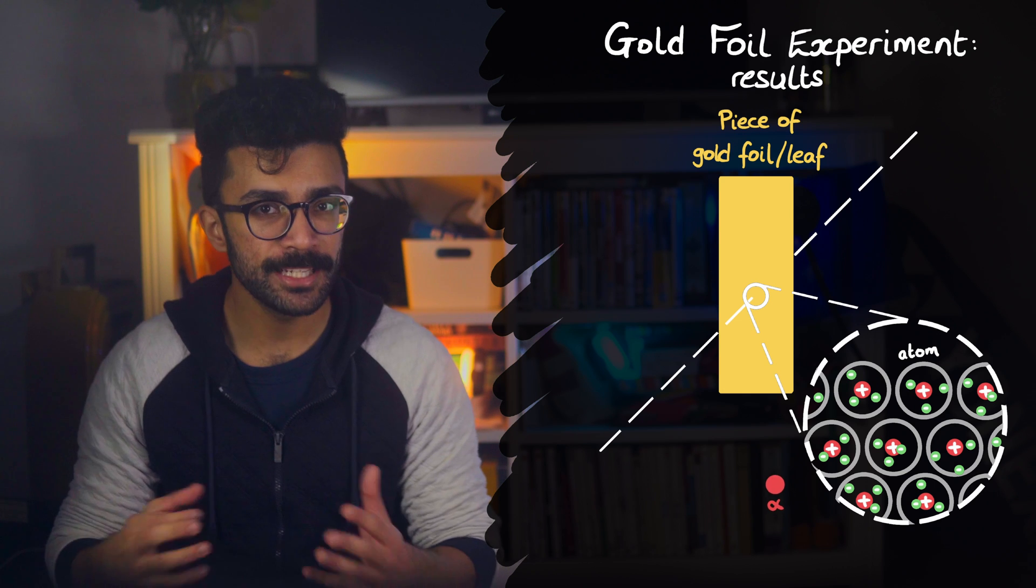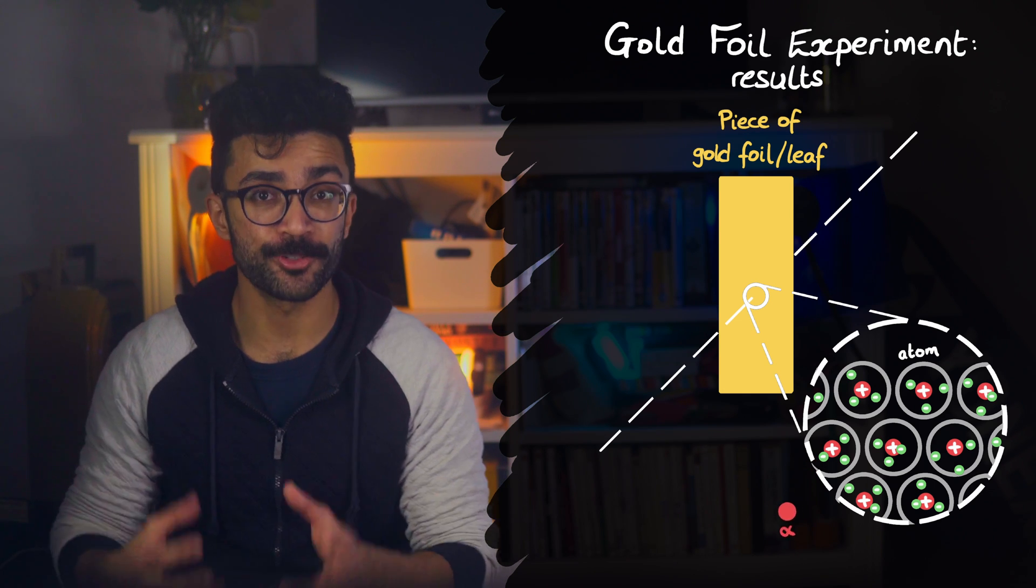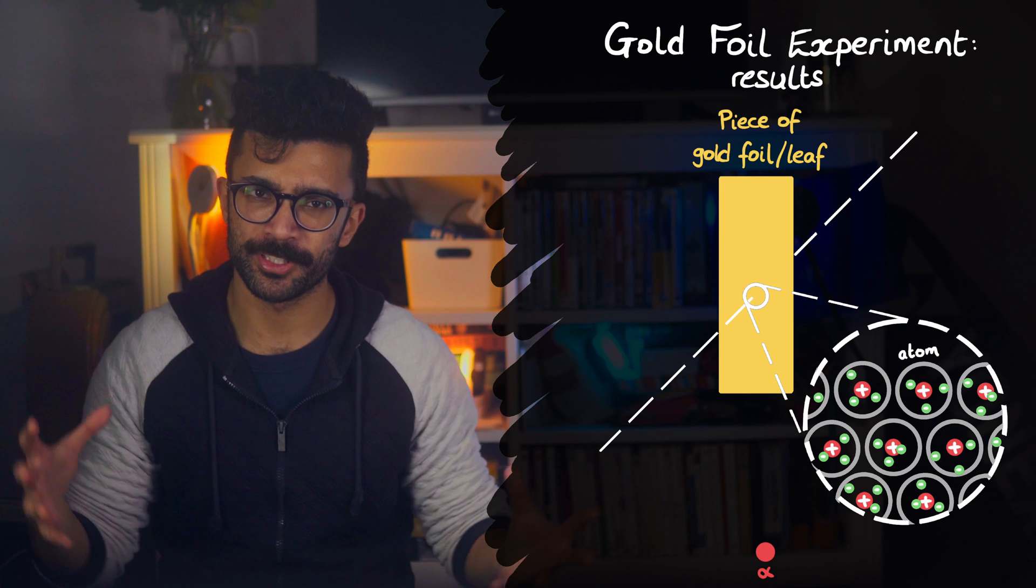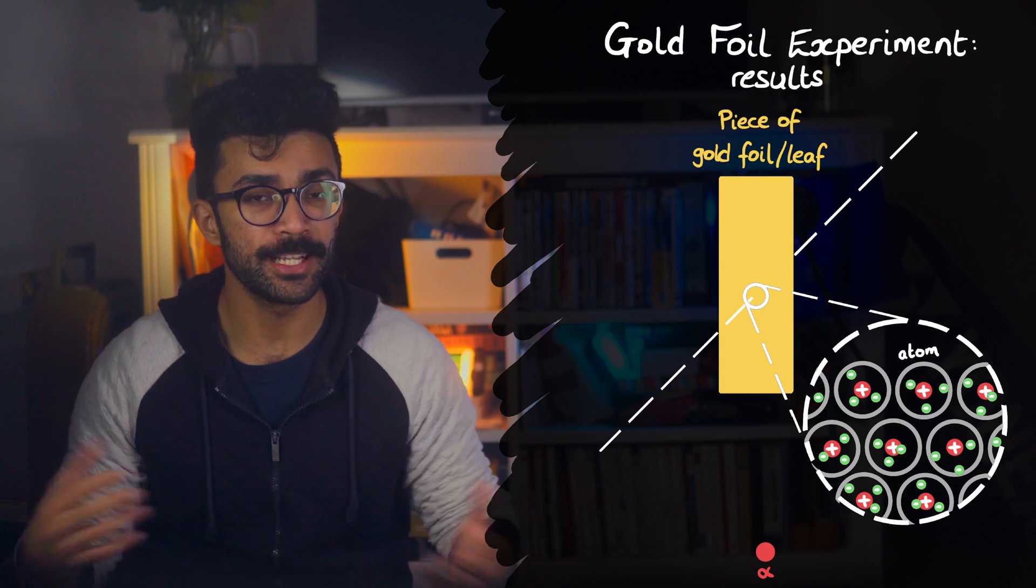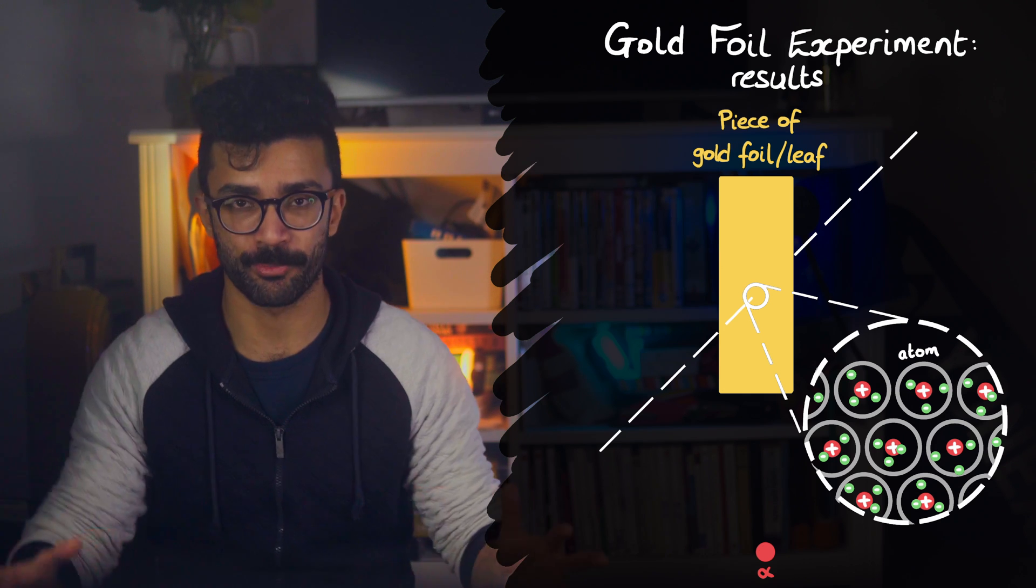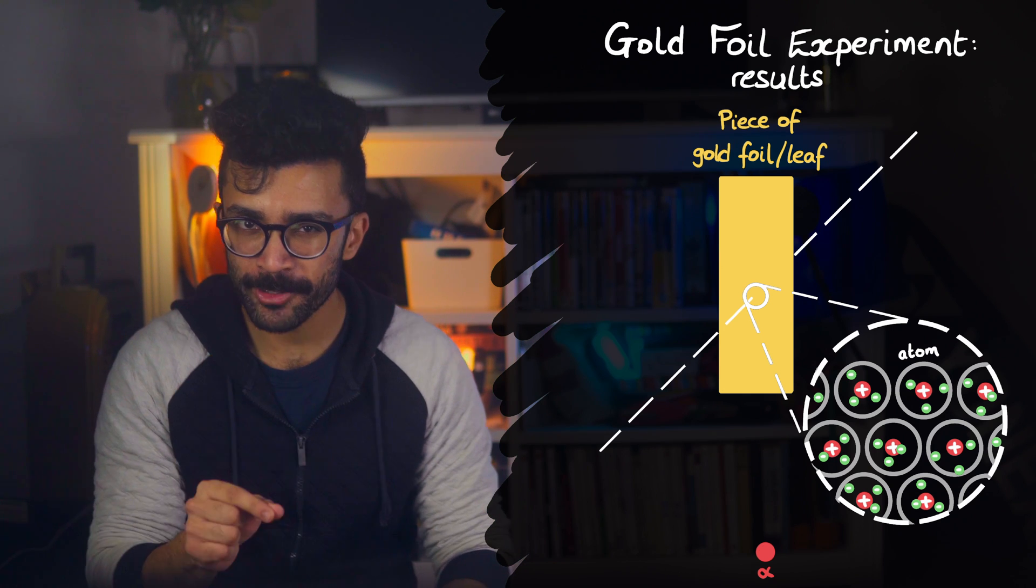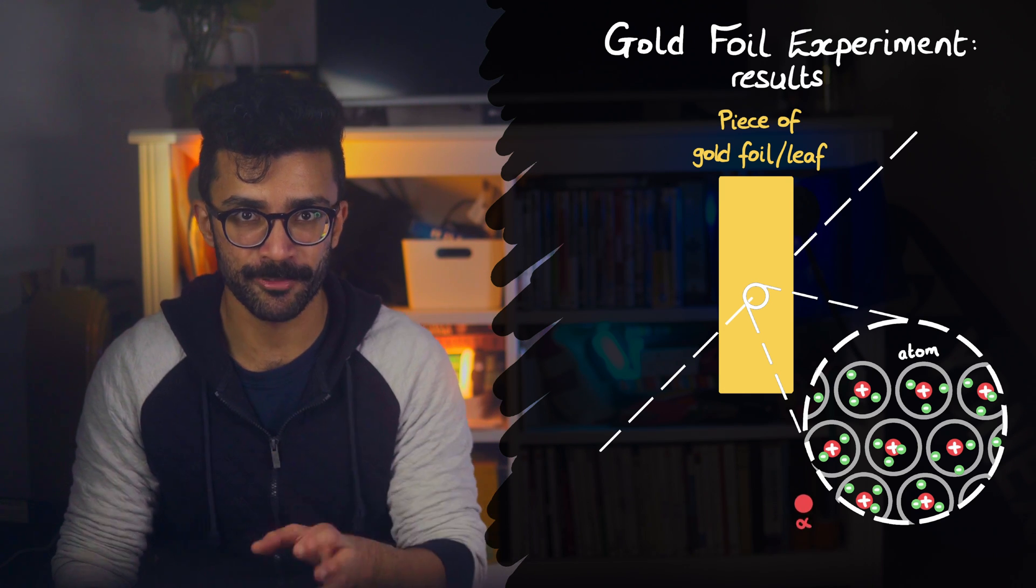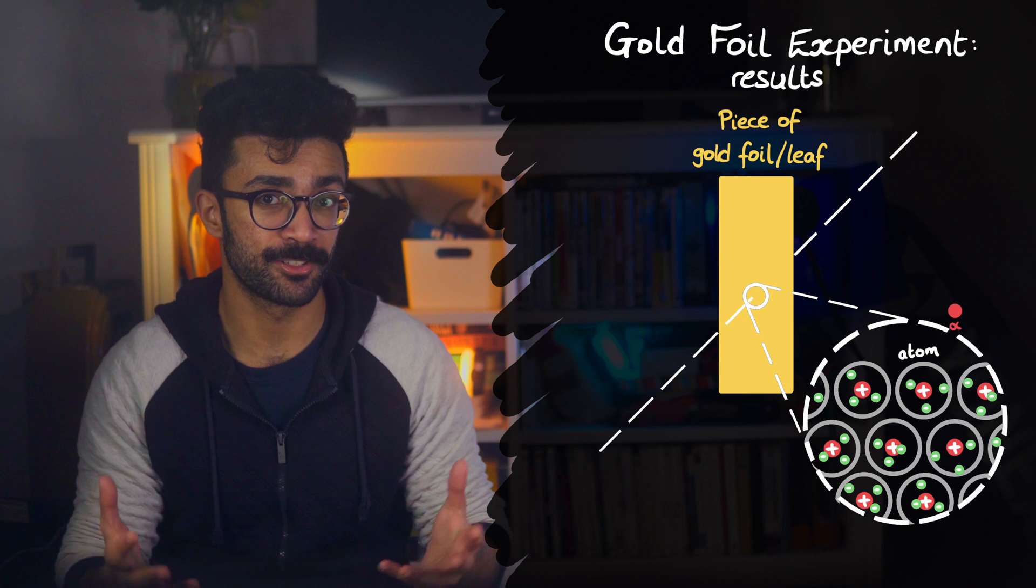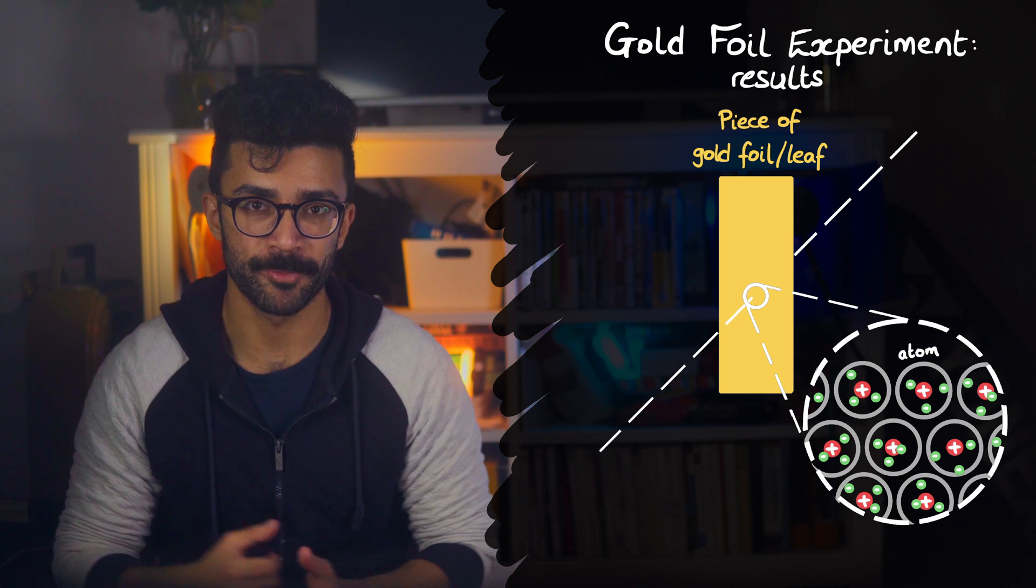So he realized that the big deflections were caused by very strong positive regions, as opposed to the total positive charge being spread out over a large region, and therefore interacting weakly with alpha particles, because it was so spread out. The fact that only a small amount of alpha particles deflected so much also confirmed that the strong positive regions should be confined to small spaces, with the rest of the atom having to be empty space, pretty much.